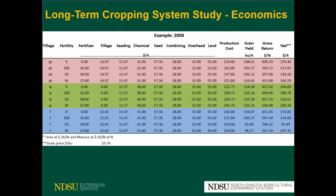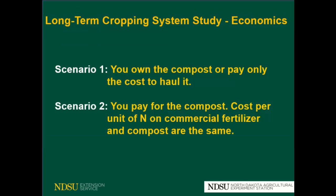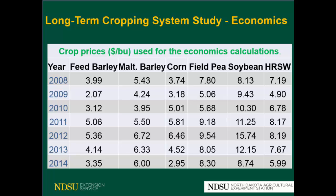Some of the things we take into consideration when calculating the economic analysis include the cost of fertilizer, tillage, seeding, chemicals, harvesting, combining, and so on. We assume two different scenarios: scenario one, where the producer owns the compost and pays only to haul and apply it; and scenario two, where the producer buys the compost from a neighbor and pays based on the amount of nitrogen in the product at the same cost as commercial fertilizer. These are the prices we used from 2008 to 2014 for the different crops.